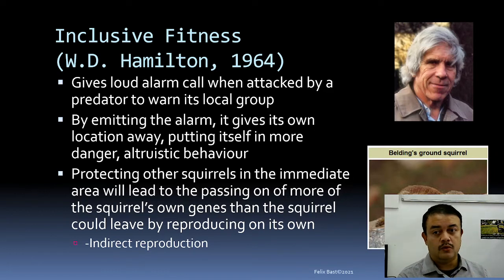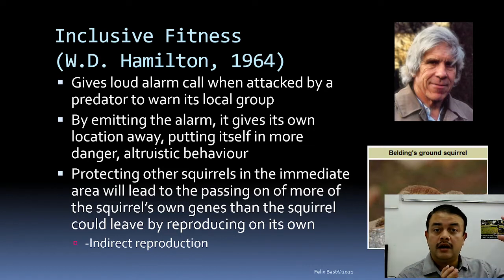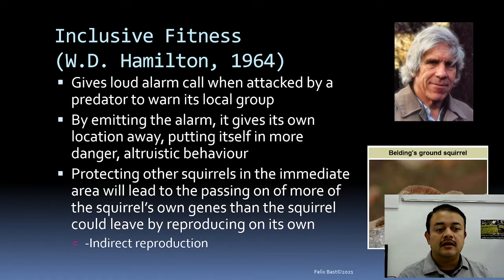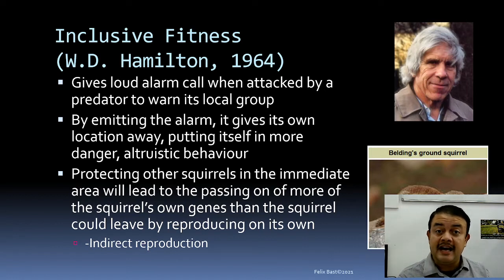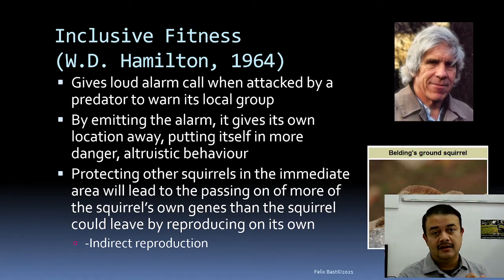Inclusive fitness can be illustrated with Belding's ground squirrel. When attacked by a predator like an eagle, this squirrel gives a loud alarm call, drawing the predator's attention and self-sacrificing to warn its local group. Through this self-sacrifice, the individual saves hundreds of other squirrels nearby. This is altruistic behavior — why is such behavior selected in a population? Because of inclusive fitness.